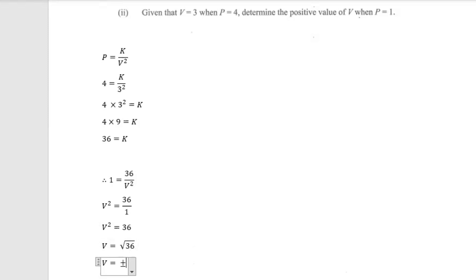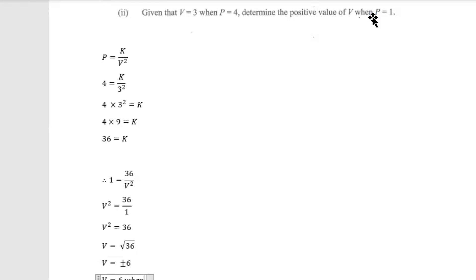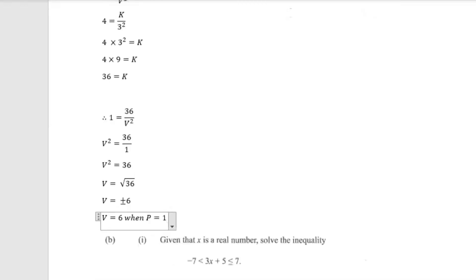v equals plus or minus 6, because 6 times 6 equals 36 and negative 6 times negative 6 also equals 36. However the question asks for the positive value of v when p equals 1, so therefore v equals 6. And that is our answer.